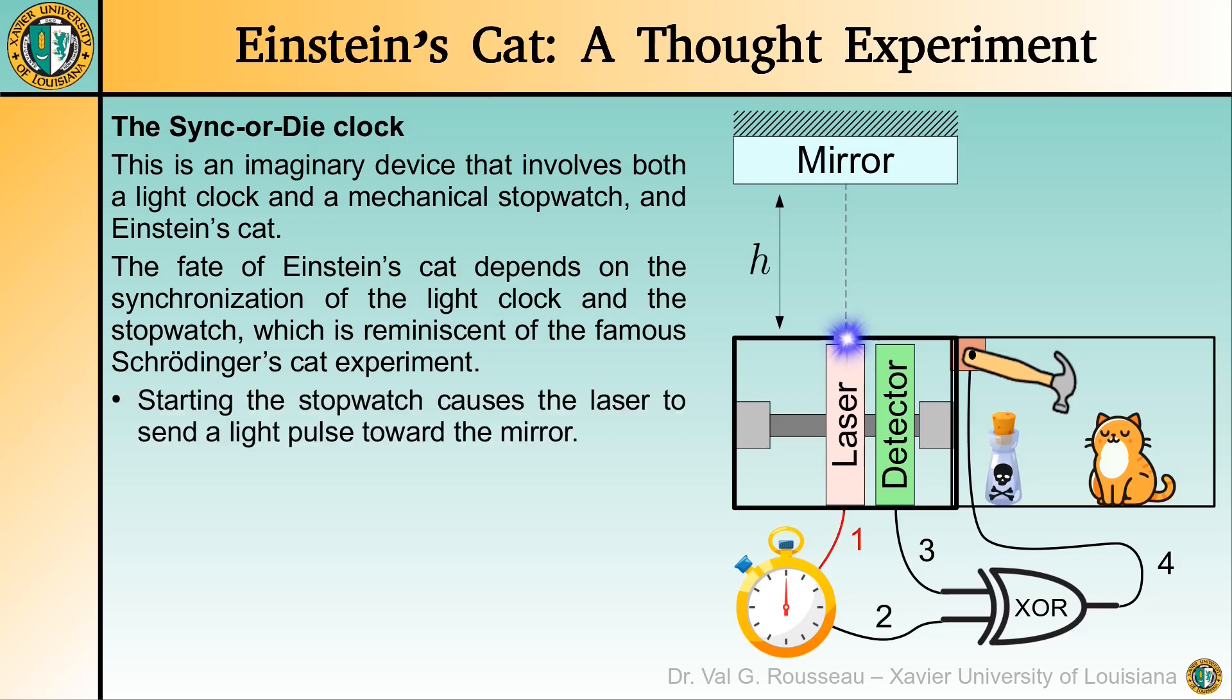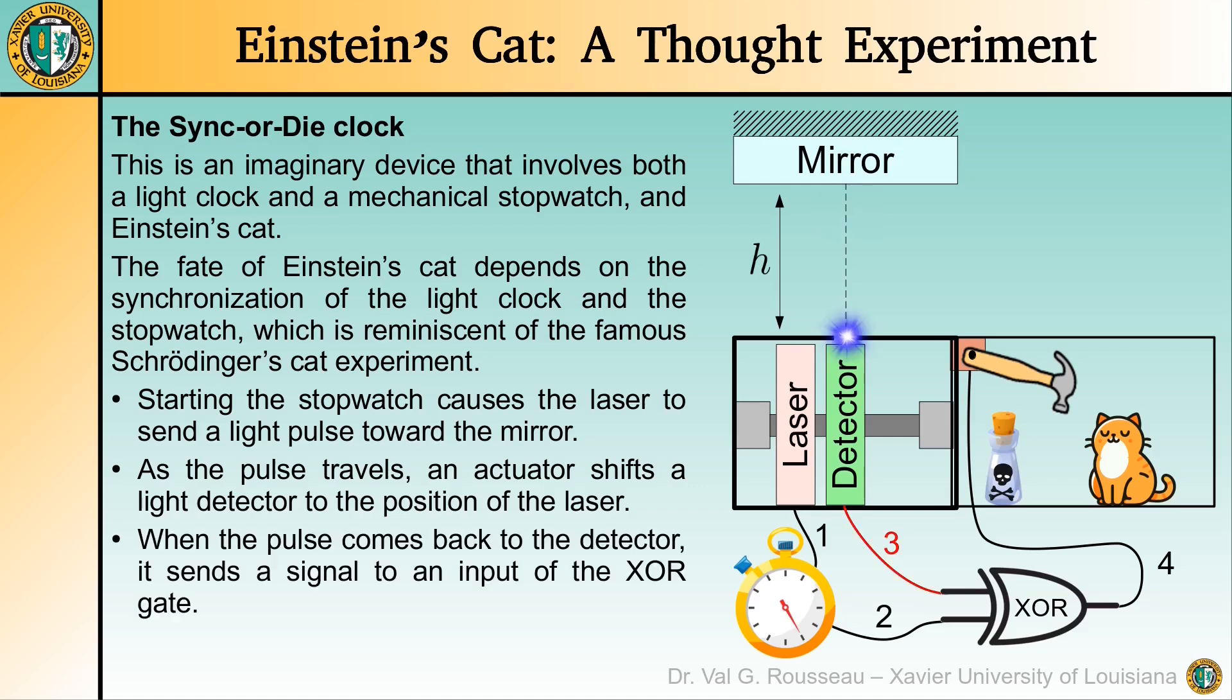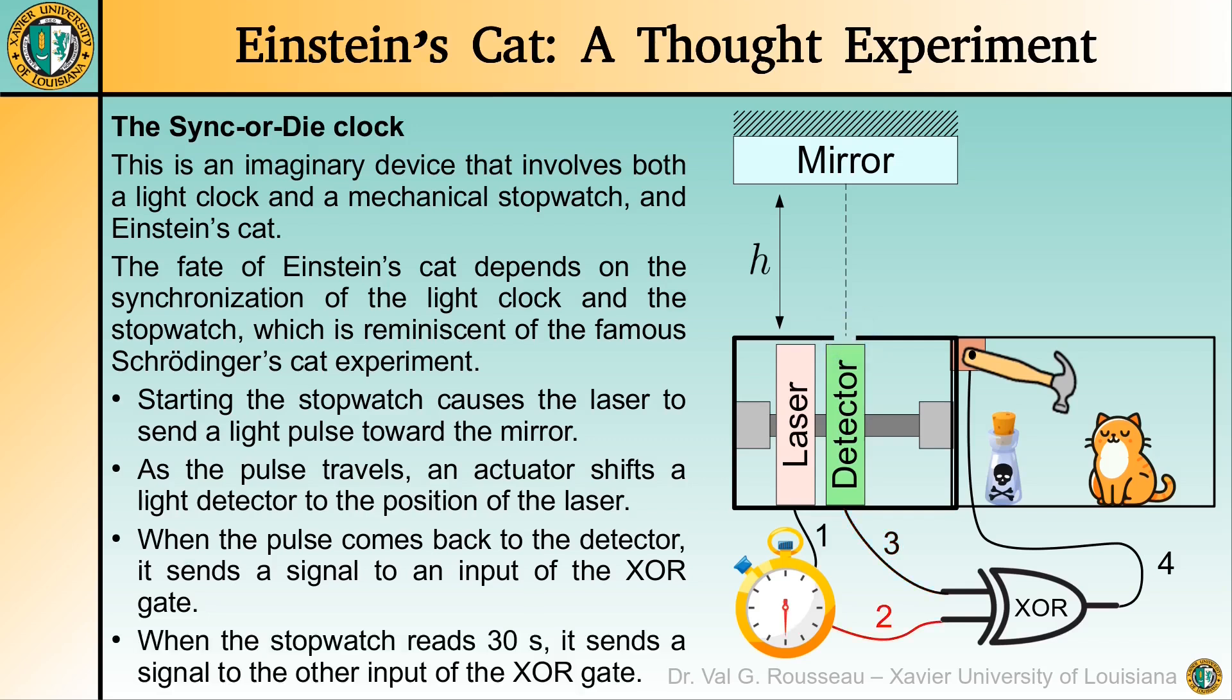The stopwatch has a contact so that when it is started, it activates a laser that sends a pulse toward the mirror. Right after the pulse has been emitted, an actuator shifts a light detector to the position where the laser was. When the pulse comes back to the detector after having been reflected by the mirror, a signal is sent to one input of an XOR gate. The stopwatch also has another contact so that it sends a signal to the other input of the gate when it reads a time of 30 seconds.